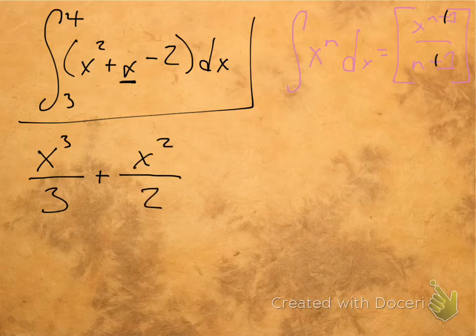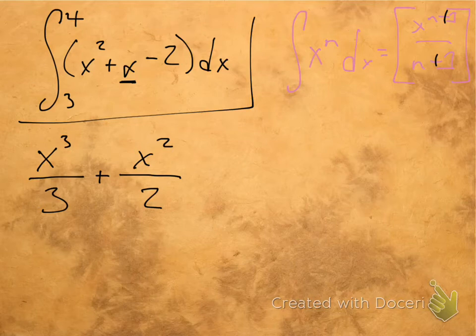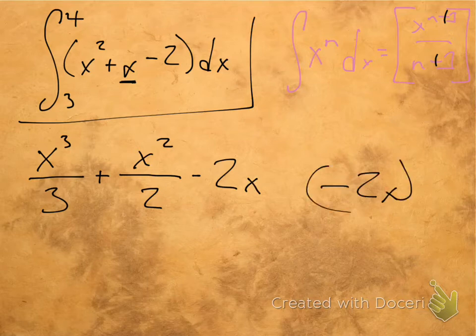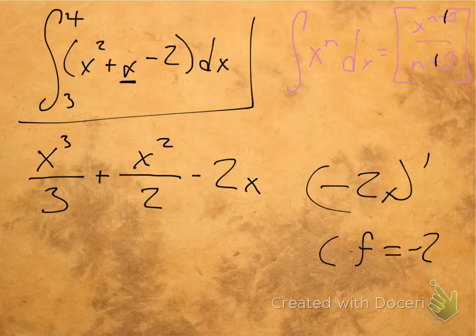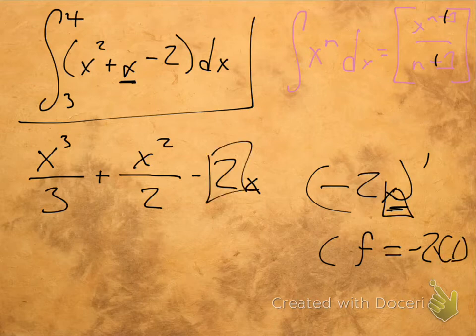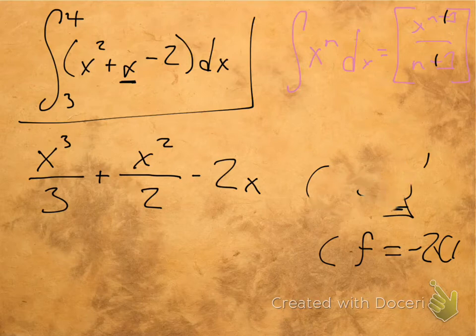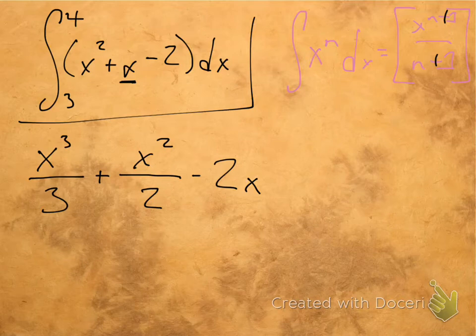So x cubed over 3 plus x squared over 2. And then this negative 2 here, well, that's just going to be negative 2x. Because we know when we take the derivative of negative 2x prime, this is just a constant times a function rule, which is going to be the constant times the derivative of the function. And the derivative of this function, just x here, is always just 1. So it's 2 times 1 or just 2.